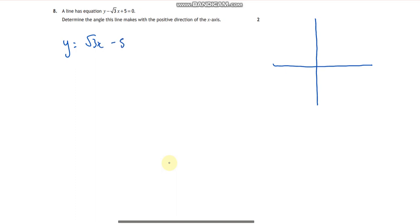I'm going to get it into the form y equals mx plus c, so all I've done is add root 3x to both sides and take away 5. So I know it's got a positive gradient and I know it hits the y-axis at negative 5.